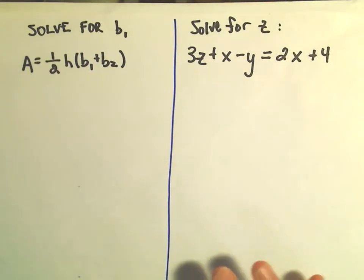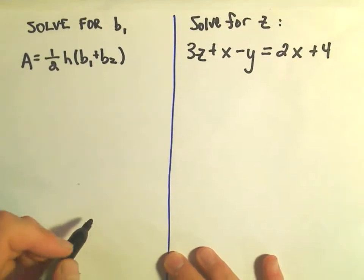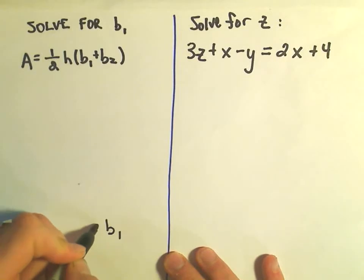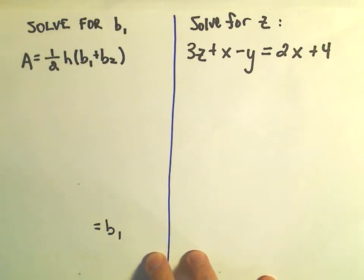So what that means is eventually we want to do a whole bunch of algebra and get b1 all by itself. There's certainly a couple different ways we can go about doing this. The first thing I notice is that there's a one-half in here, and typically if I can get rid of fractions, that's the first thing I like to do.